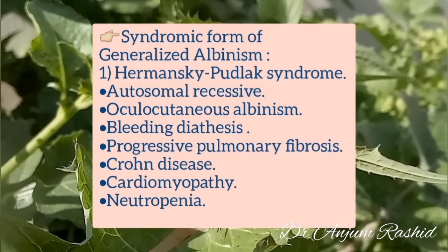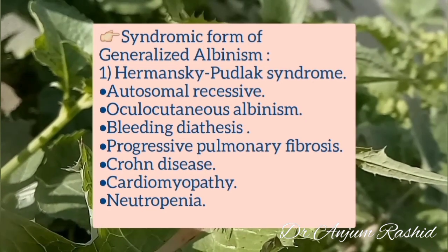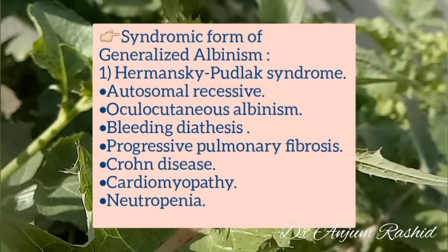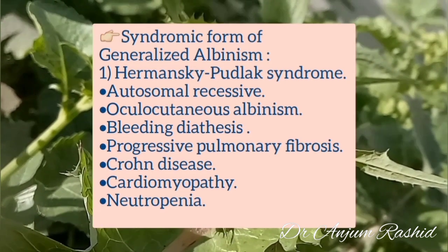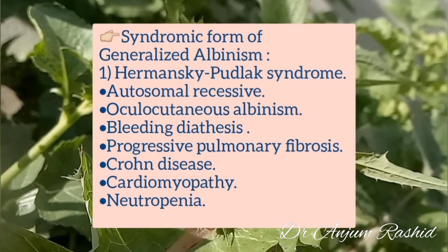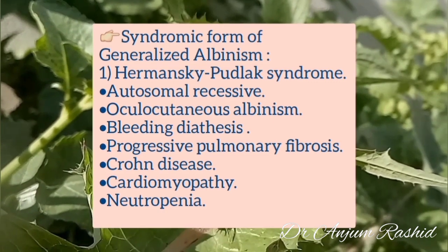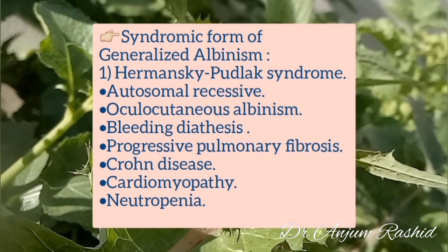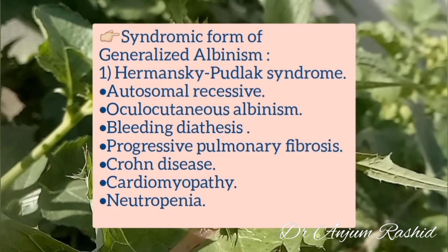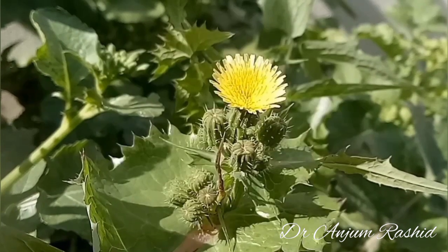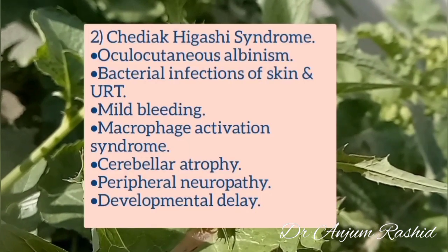The syndromic forms of generalized albinism include Hermansky-Pudlak syndrome and Chediak-Higashi syndrome. Hermansky-Pudlak syndrome is an autosomal recessive disorder with oculocutaneous albinism; bleeding is common, and there may be cardiomyopathy and neutropenia.